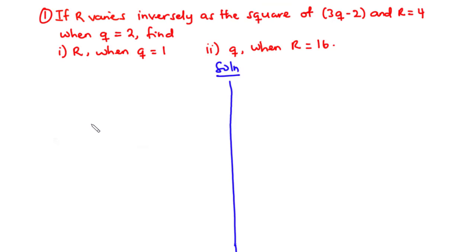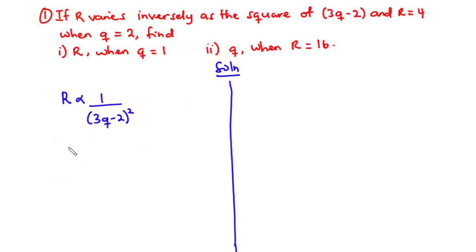So from the question, we are given the condition that r varies inversely as the square of (3q minus 2). So that is r varies inversely as 1 over the square of (3q minus 2). We have r to be 4 when q is equal to 2. Now the first thing we are going to do is remove the proportionality sign and introduce an equality sign and a constant.